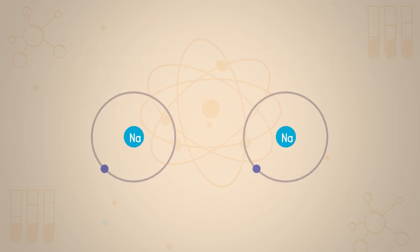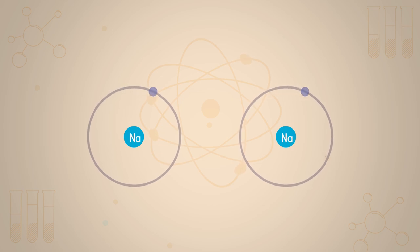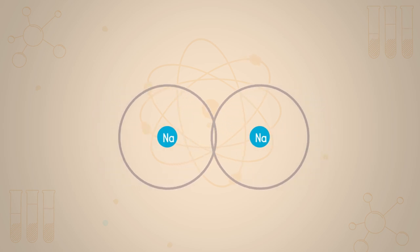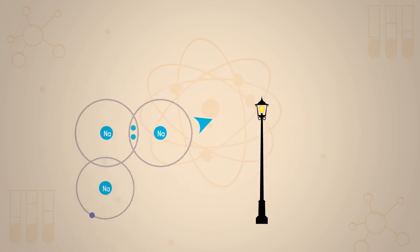We now consider two metal atoms which approach each other. As these sodium atoms approach, their electrons overlap and a molecule will form because there is plenty of room in their outer shells. Such molecules do actually exist, for example in sodium vapor streetlights.